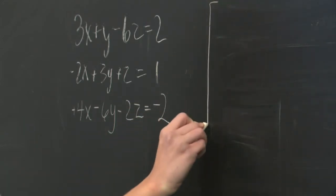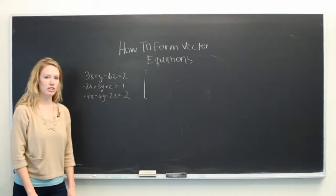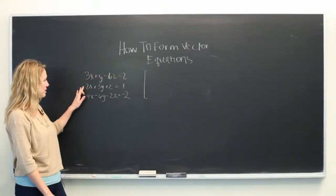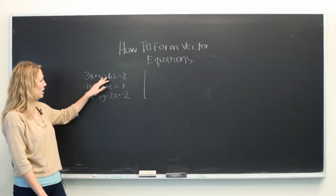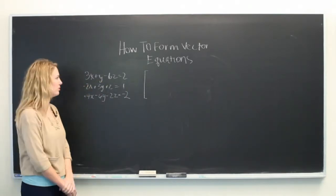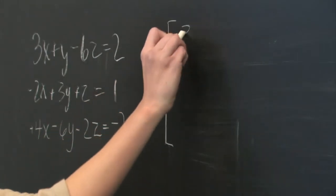So to do that, we're going to come over here and write each of the components that we see in these equations. 3, 1, and minus 6 are the coefficients, so we're going to write these values down.